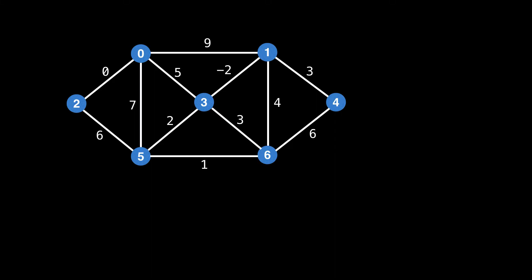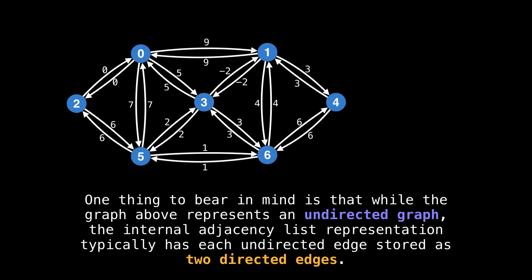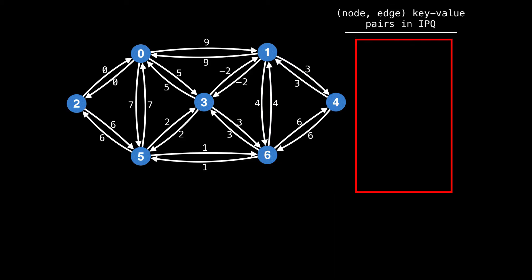Alright, I think it's time to see an example. Suppose we have the following weighted undirected graph, and we want to find any minimum spanning tree. One thing to remember is that while we're dealing with an undirected graph, we will be internally representing it as a directed graph, where each undirected edge is stored as two directed edges. I will be keeping track of all node-edge key-value pairs on the right and update them accordingly as the algorithm executes — you can think of the red box as the contents of the index priority queue. Let's begin the algorithm on node zero.